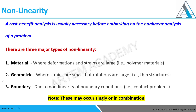Material non-linearity is where the deformations and strains are large and not proportional to each other. The best examples are polymer materials, rubber materials, plastic materials, or normal steel and other metals when crossing the yield strength.